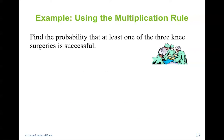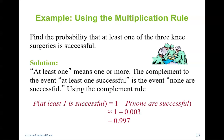Find the probability that at least one of the three surgeries is successful. At least one means one or more. The easiest approach is to take one minus the probability that none are successful, since we could have one, two, or all three successful. So one minus 0.003 equals 0.997.